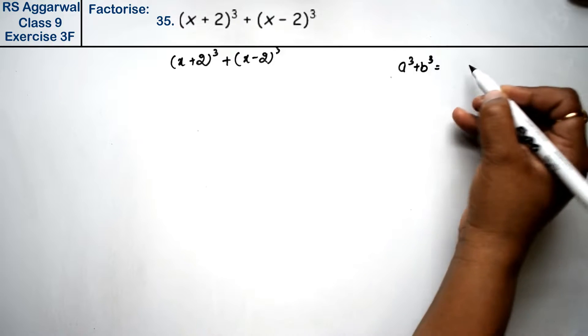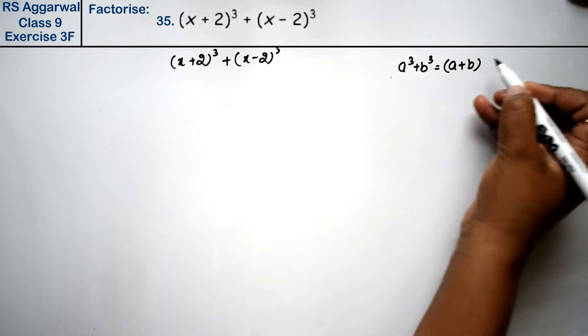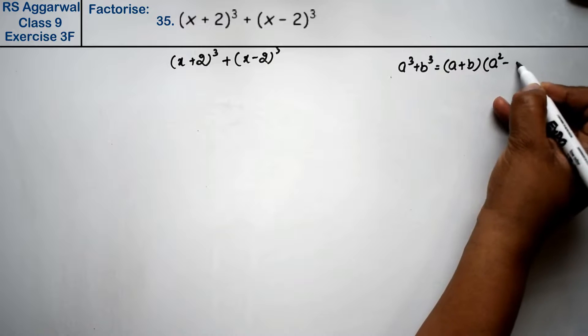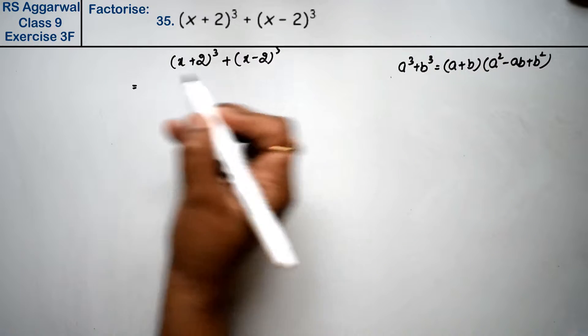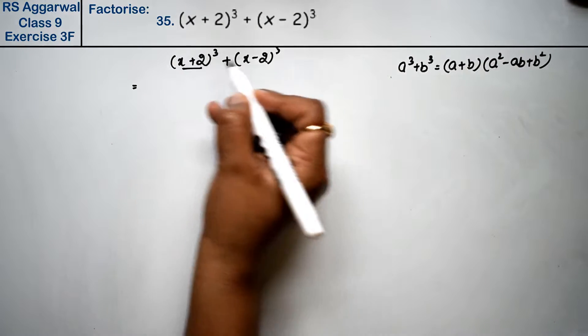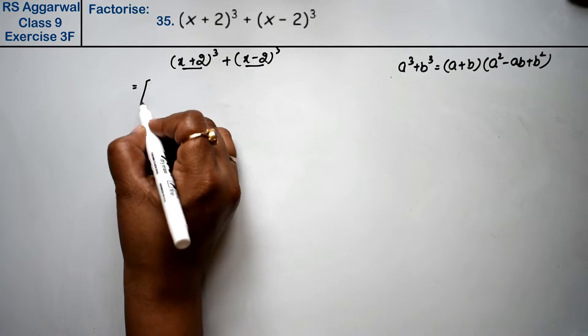The formula for a³ + b³ is (a+b)(a² - ab + b²). Here, a is (x+2) and b is (x-2).